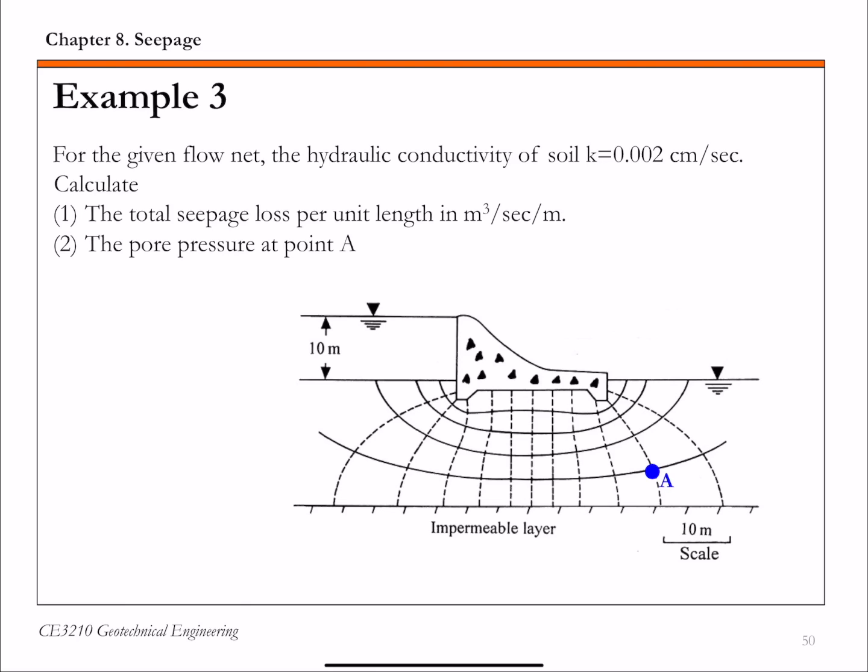And for this given flow net, first the information we can get from this graph includes the upstream water table, this is what we typically call H1, and then downstream water table we call H2 here. And for this particular setup, the downstream water table is actually at the level of the ground surface.